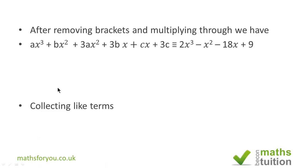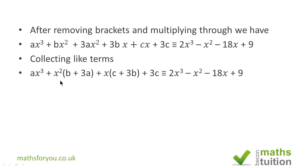So we now need to collect like terms first and then we have ax³ + x² (b + 3a) + x(c + 3b) + 3c, and that's equivalent to 2x³ - x² - 18x + 9.